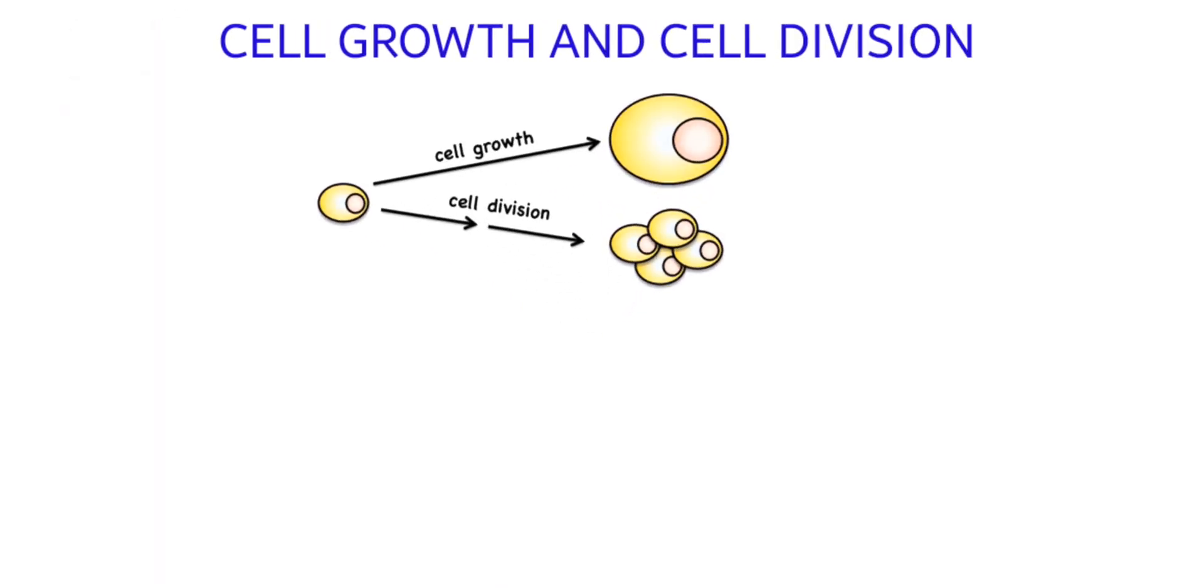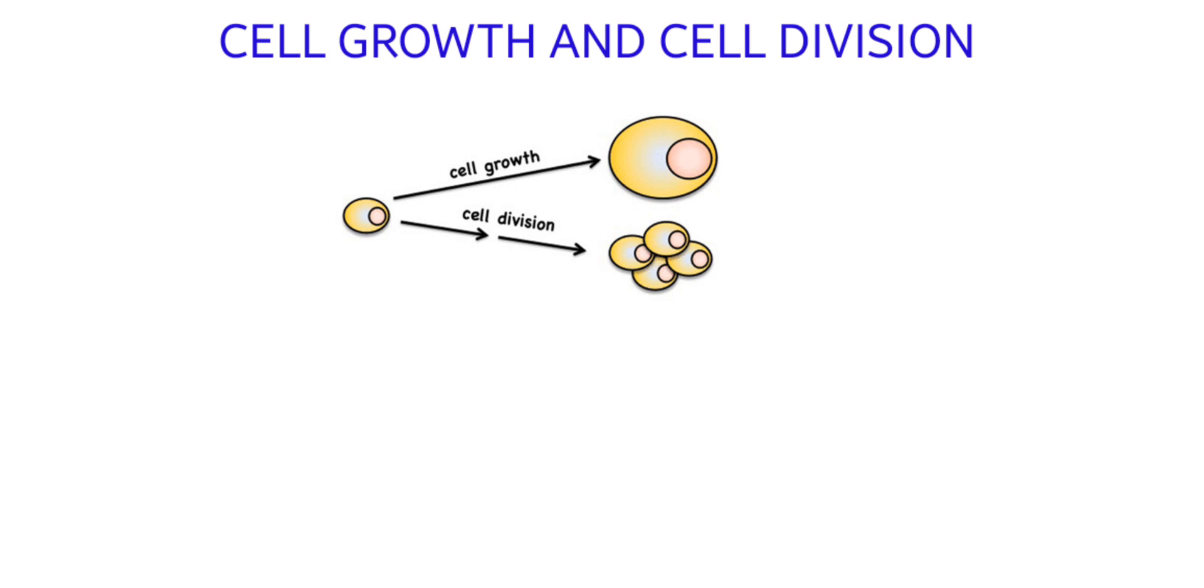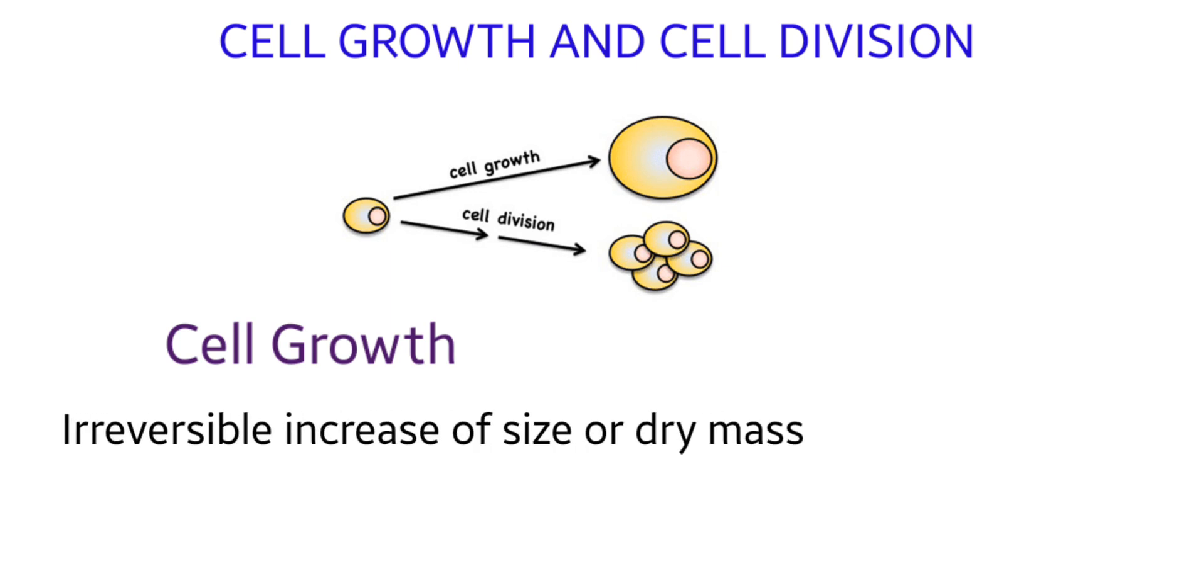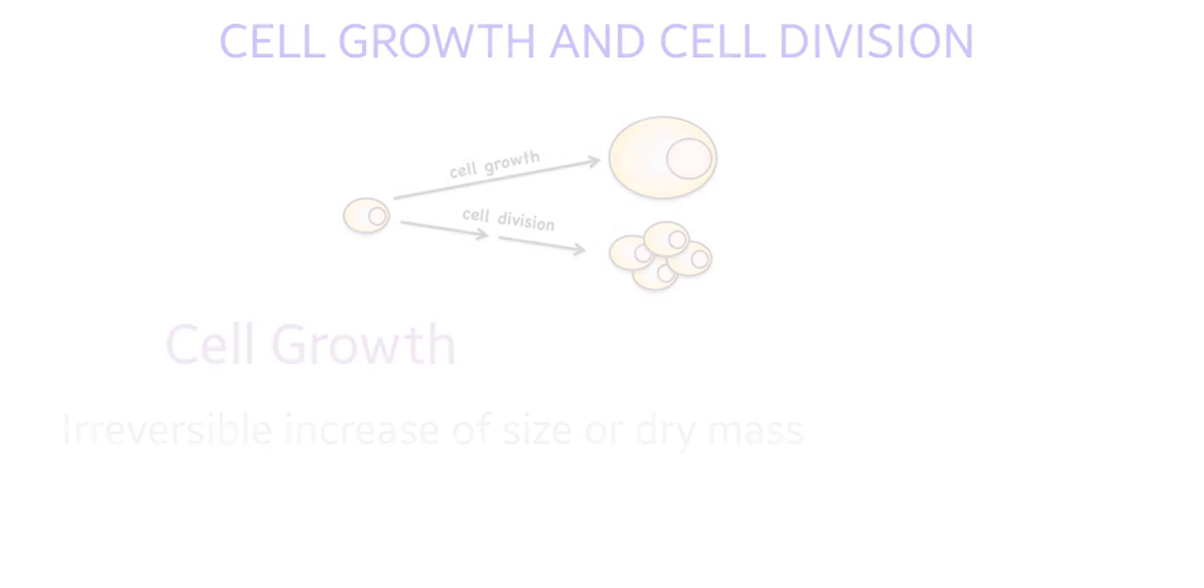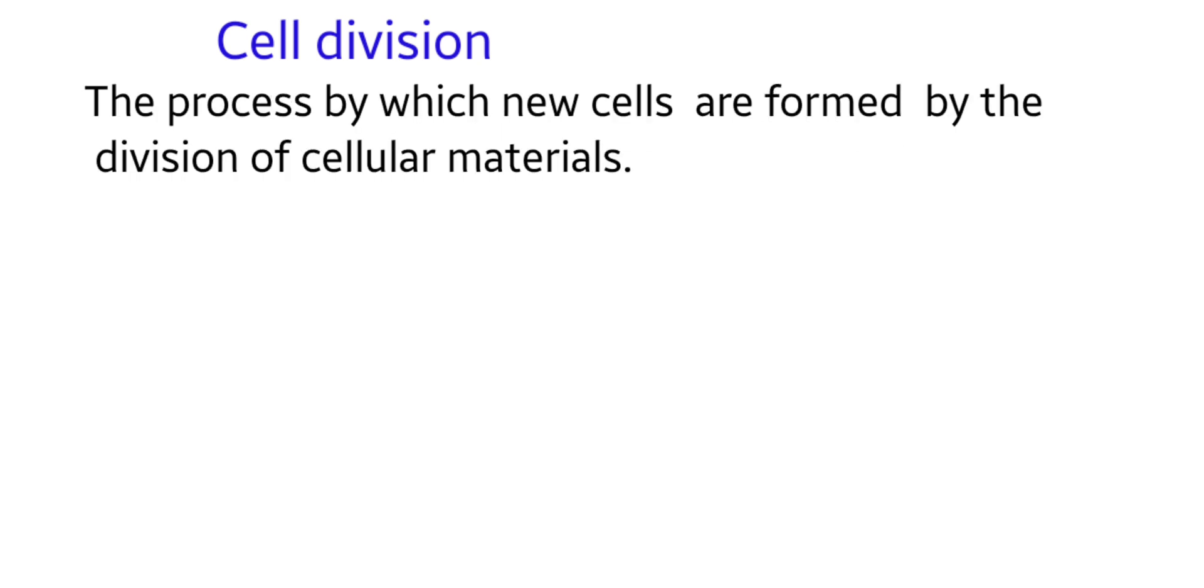In this session we will learn about cell growth and cell division. Cell growth is a basic feature of an organism. It is an irreversible increase of size or dry mass. Cell division is the process by which new cells are formed by the division of cellular materials.